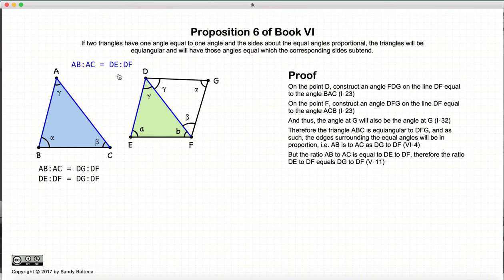So we can turn around and we can just copy this bit here and place it there. So we end up with this relationship, where DE to DF is equal to DG to DF.